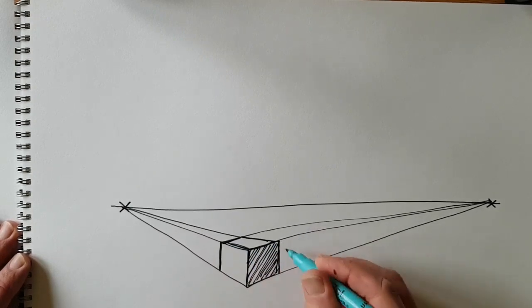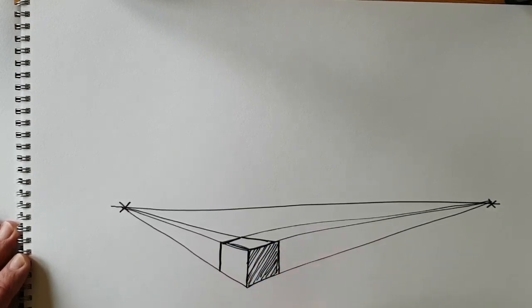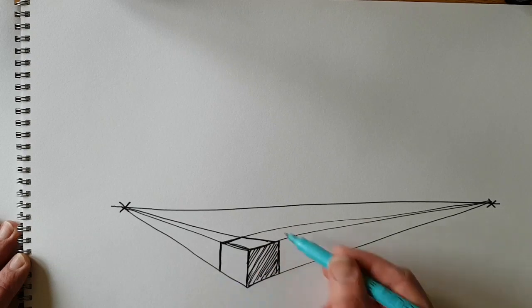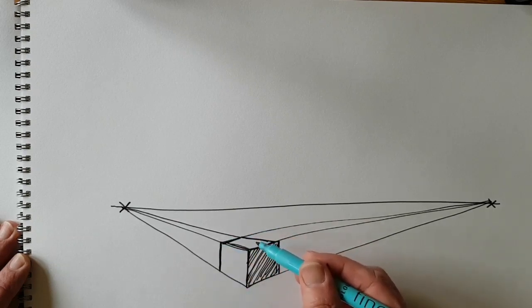These lines here they're no longer needed if you've worked in pencil you can rub them out if you want to but you don't have to you might want to leave them in so it's nice and clear. This box is below the eye line and because it's below the eye line I can see the top of the box.